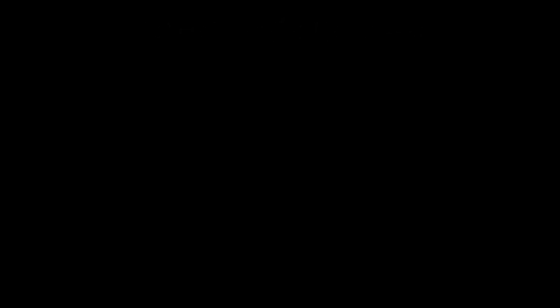We want this parabola to intersect the three points x sub 0, f of x sub 0, x sub 1, f of x sub 1, and x sub 2, f of x sub 2, so substitute these values into the parabolic equation.